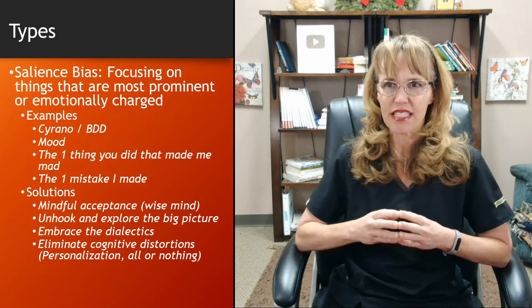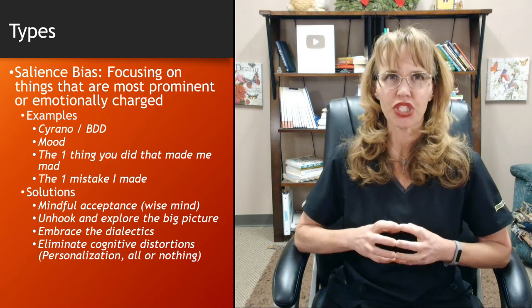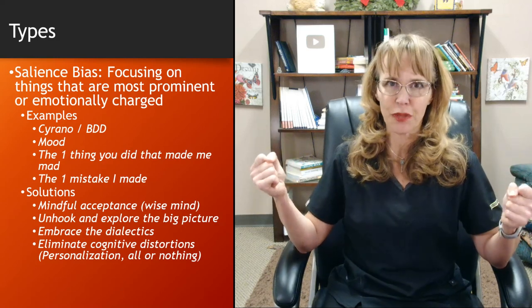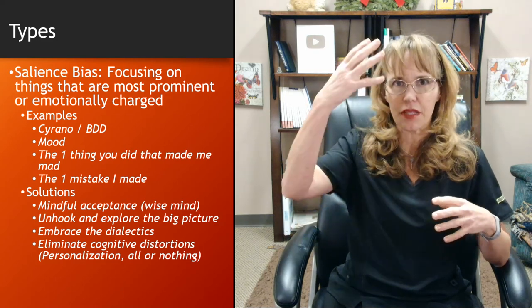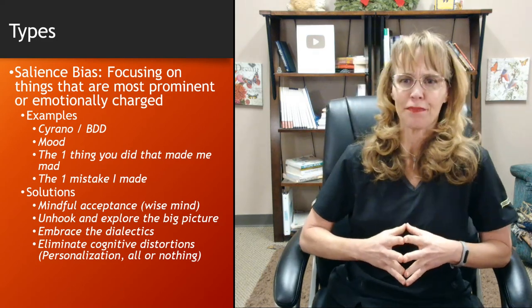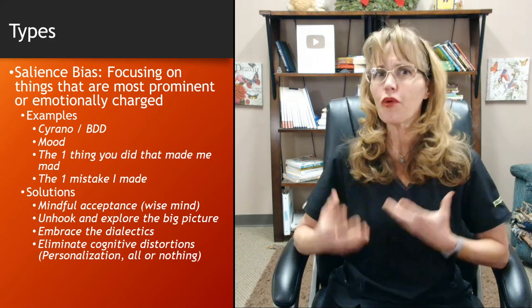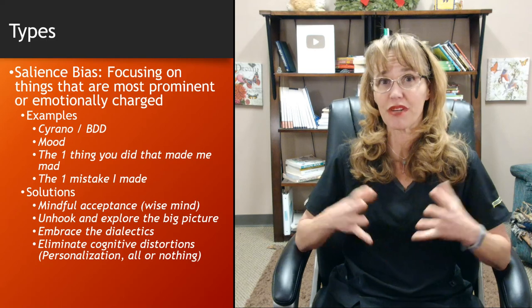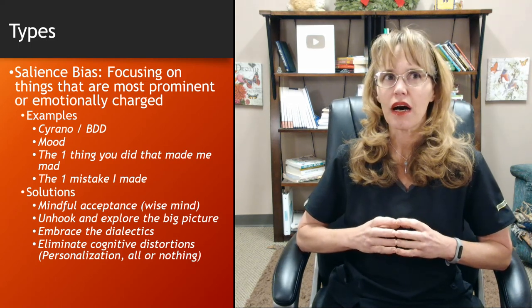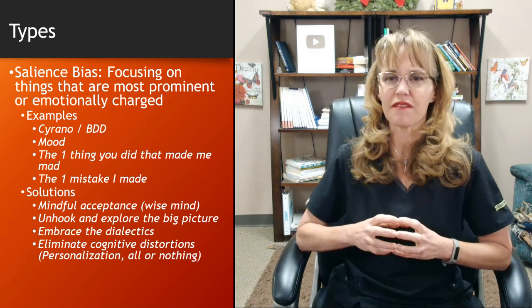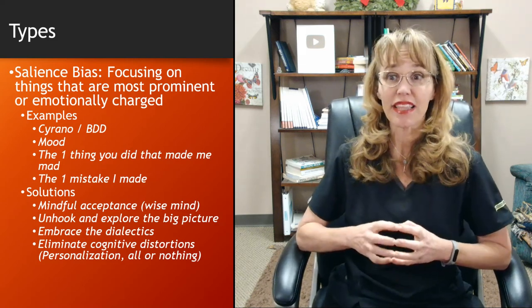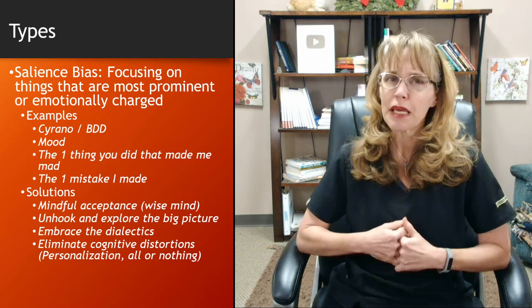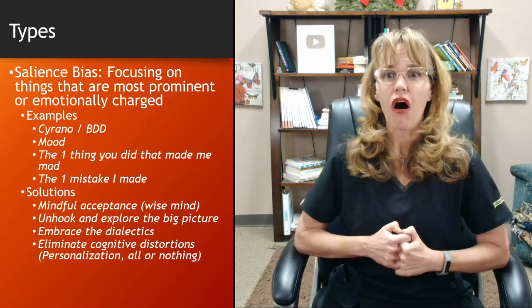The salience bias means focusing on things that are more prominent or emotionally charged. The first example that comes to my mind is Cyrano de Bergerac — he had a big nose, and that big nose tended to evoke a guttural, emotional response from people because it was so disproportionate to the rest of his face. So when we think of Cyrano, that's the first thing we think of: we focus on that one prominent thing because it evokes an emotional response.